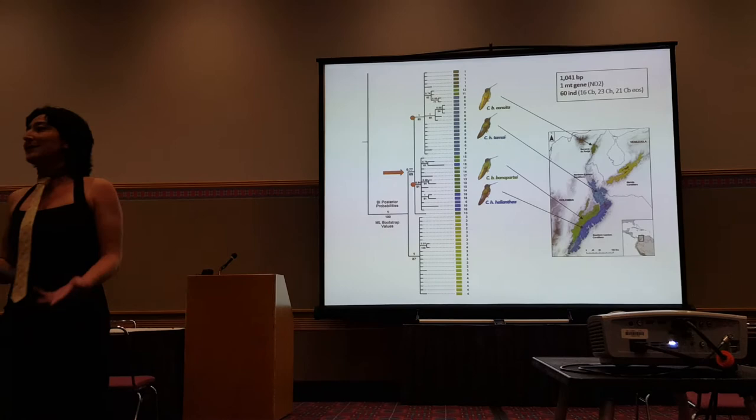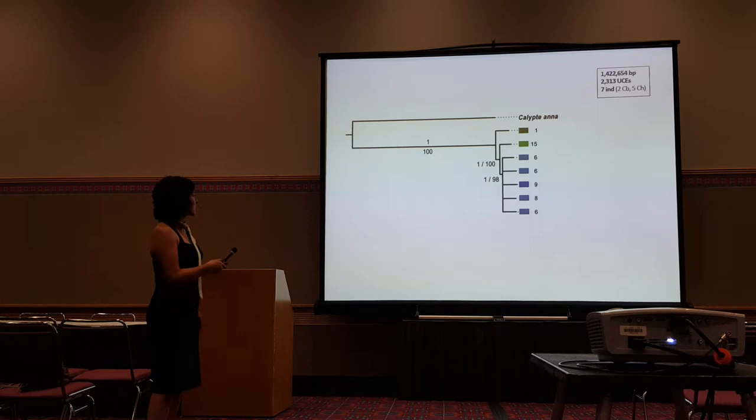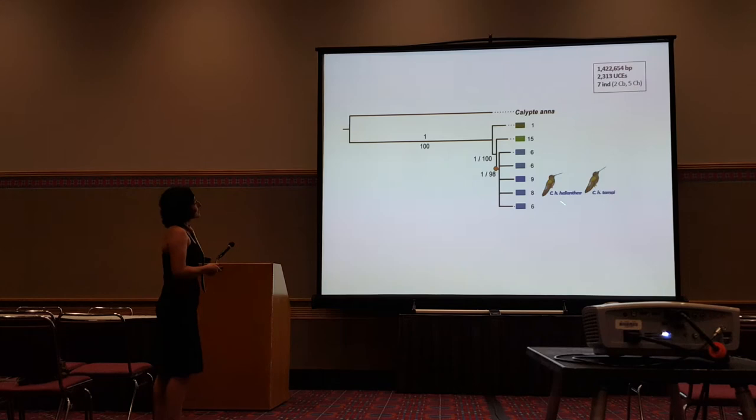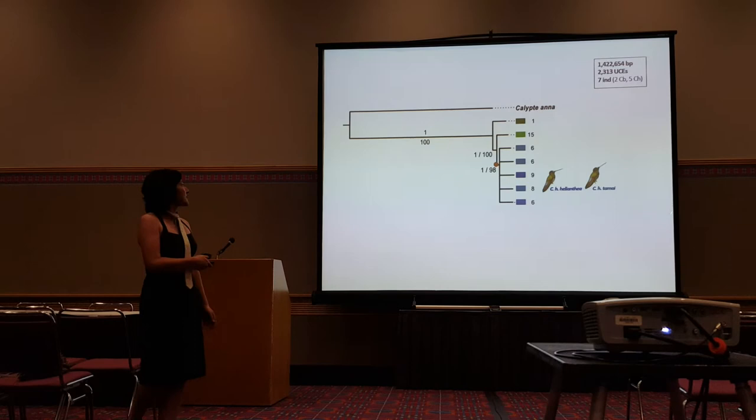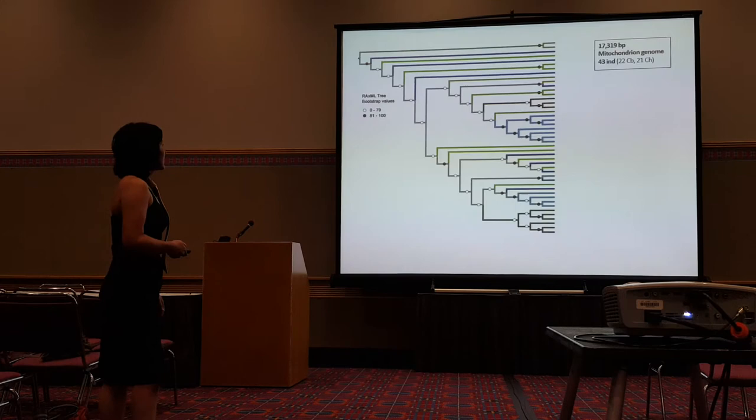We have a pattern, but there's still a mess. So we tried to resolve it using Ultra-Conserved Elements, and this is what we got: a clade where CH forms a single monophyletic group and appears to be nested inside CB. But the geographical pattern we saw before was lost.